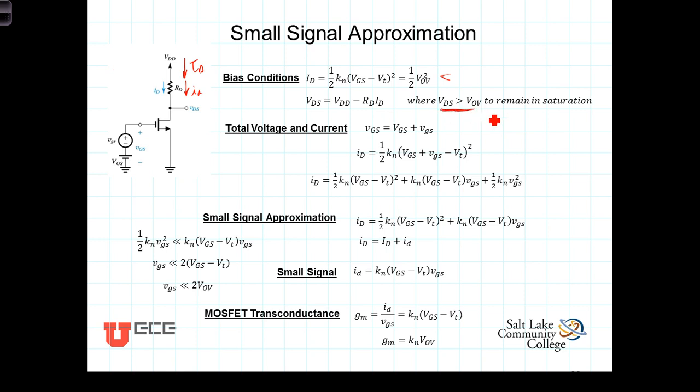Now, the total voltage and current. At the gate, VGS, the total signal consists of the superposition of the DC biasing voltage and the signal of interest. I sub d, the total current, is simply equal to one half k sub n times VGS plus lowercase VGS minus VT squared, where we're replacing VGS with the total signal. After some clever algebra, we can expand this expression and combine terms.